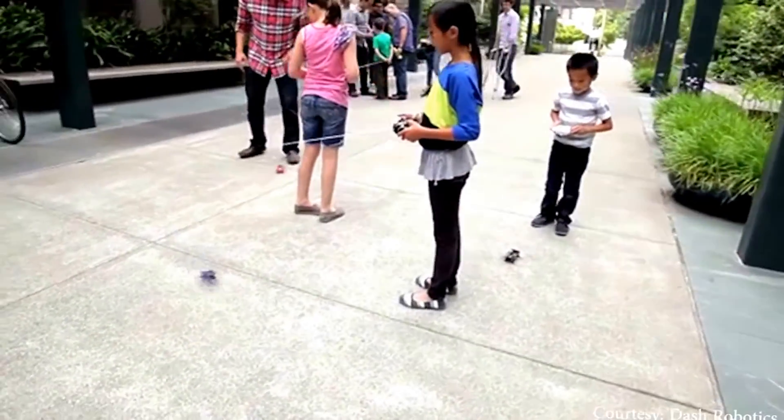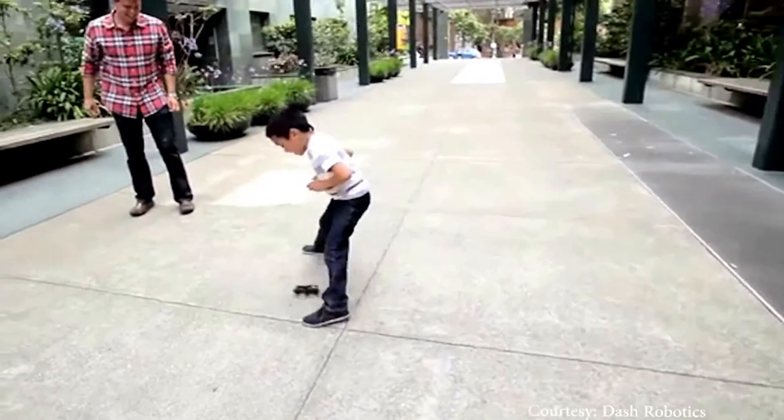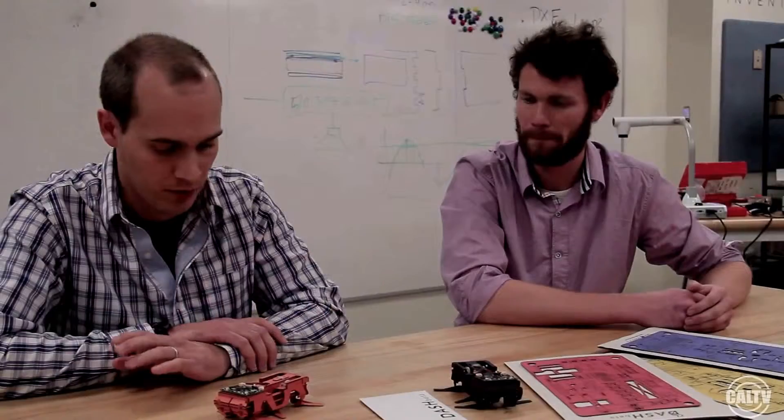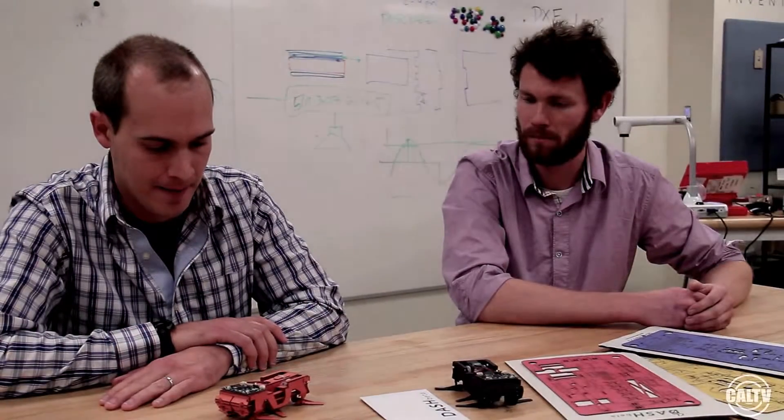Although Dash is primarily marketed as a children's toy, the robot has other applications as well. If you have a building that's collapsed due to earthquakes, you could send robots like this that can fit into small spaces, potentially find people and radio back their location, saving lives.